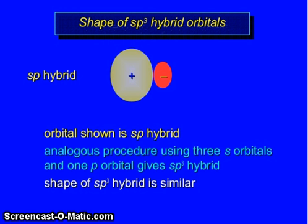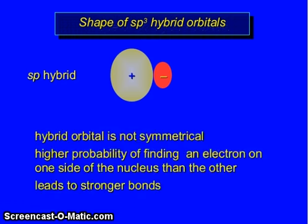sp hybridized orbital. The sp hybridized orbital is not symmetrical. Higher probability of finding an electron on one side of the nucleus than the other leads to stronger bonds. Analogous procedure using 3s orbitals and 1p orbital gives the sp³ hybrid. Shape of sp³ hybrid is similar.